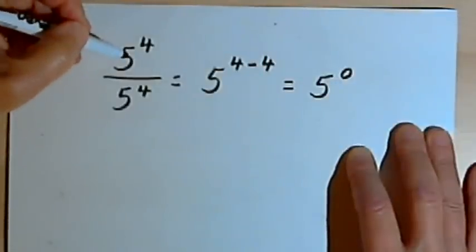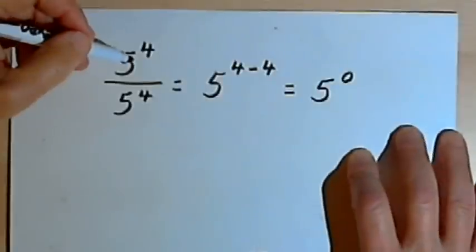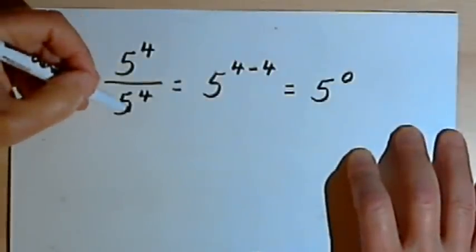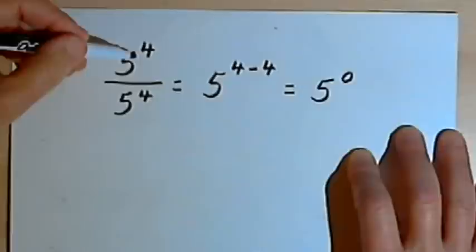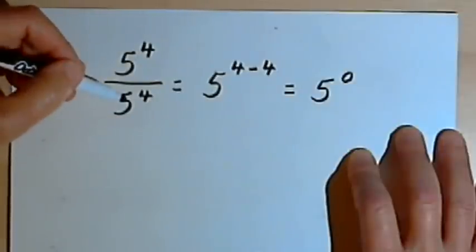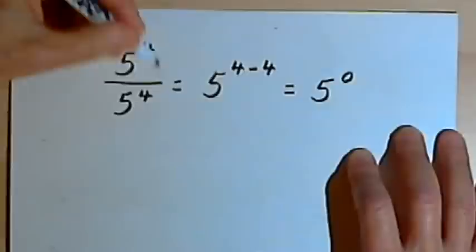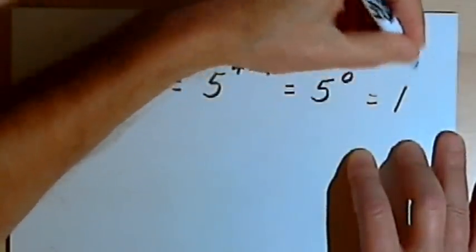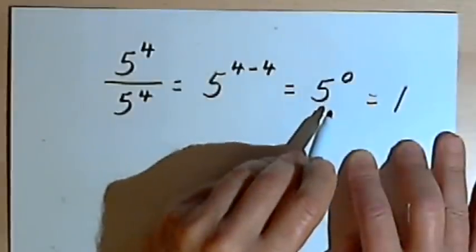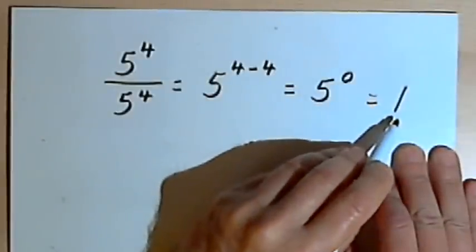Now remember, I started out with a fraction. The fraction had the same numerator and denominator, 5 to the fourth. When the numerator and the denominator are both the same in a fraction, then the fraction equals 1. So this fraction must equal 1, but it also equals 5 to the zero. So 5 to the zero would have to equal 1.